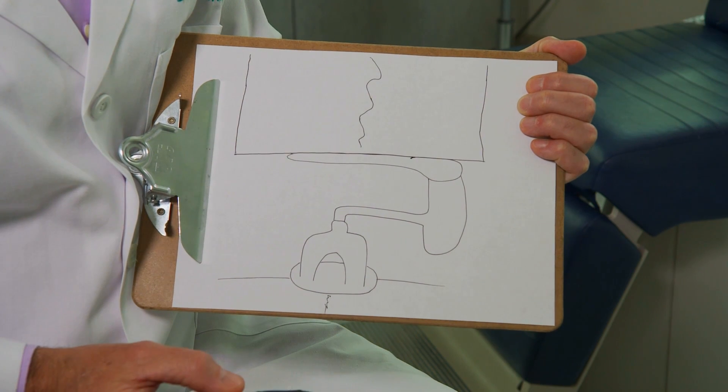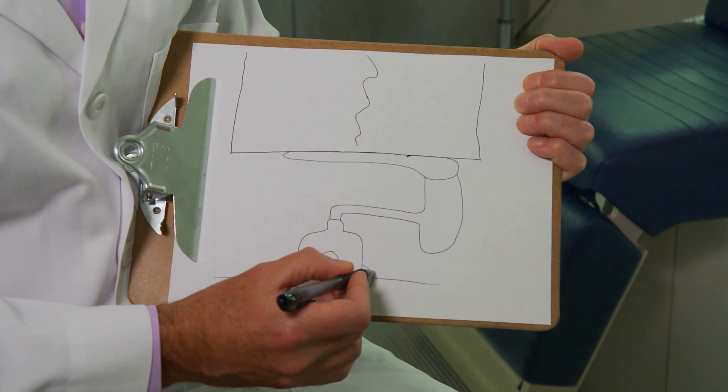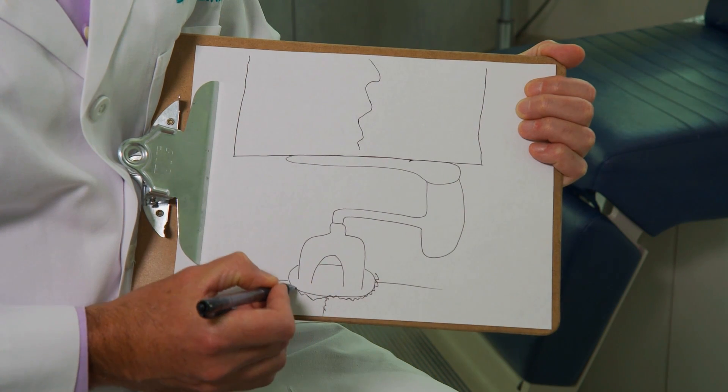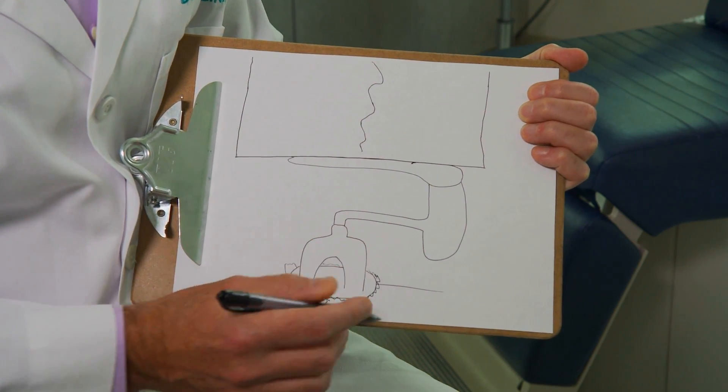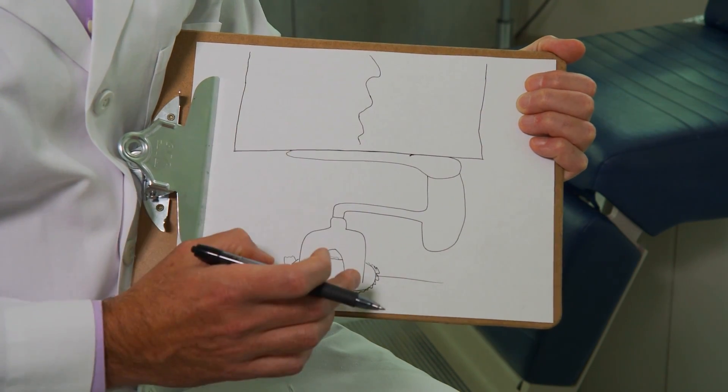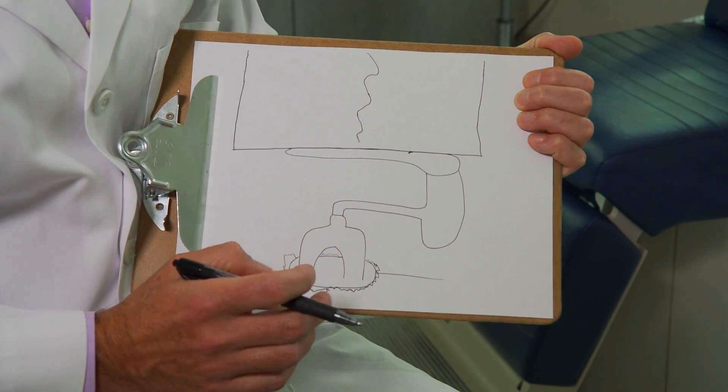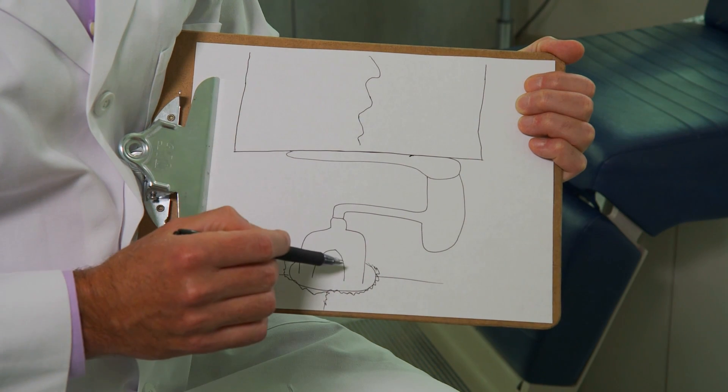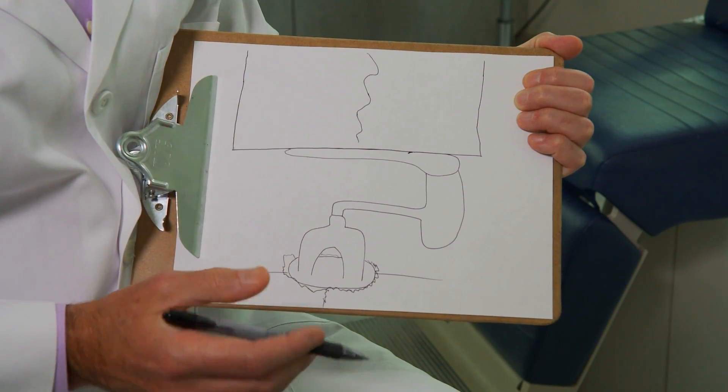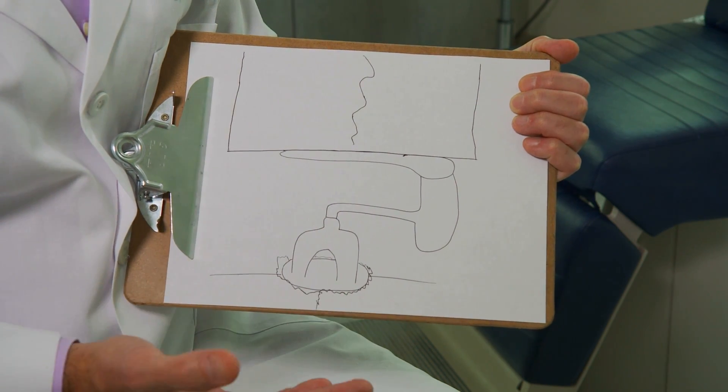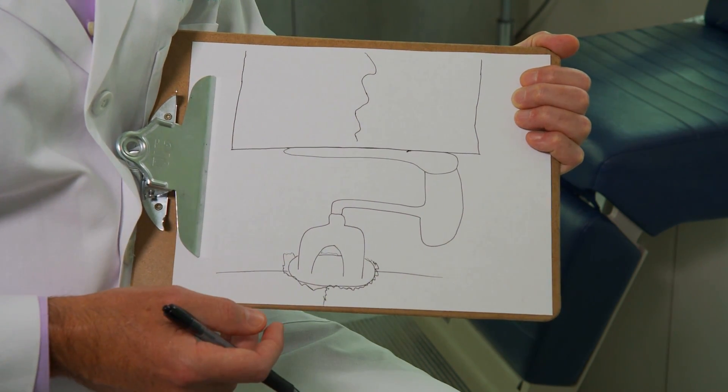In the condition of otosclerosis, there is a bony overgrowth that occurs around the footplate of the stapes. The stapes becomes frozen, and when it's frozen, sound energy becomes blocked and can't be conducted to the inner ear. This is called a conductive hearing loss and is the hallmark of otosclerosis.